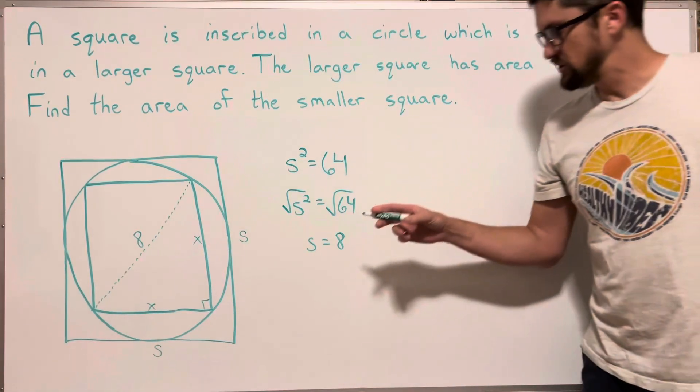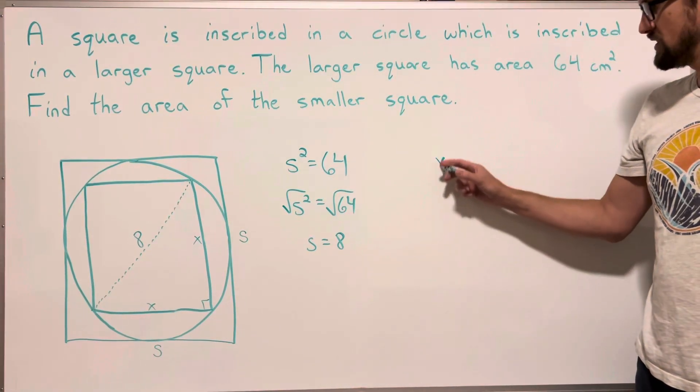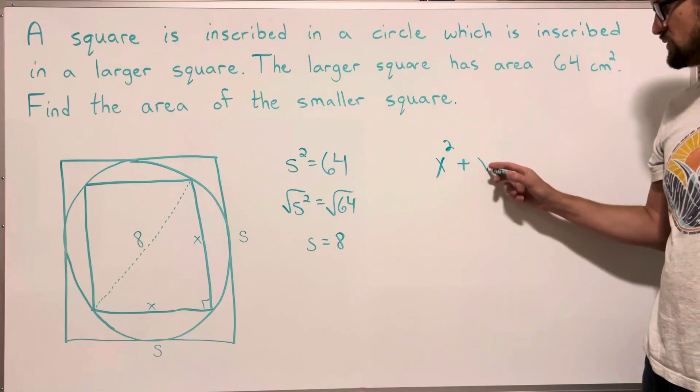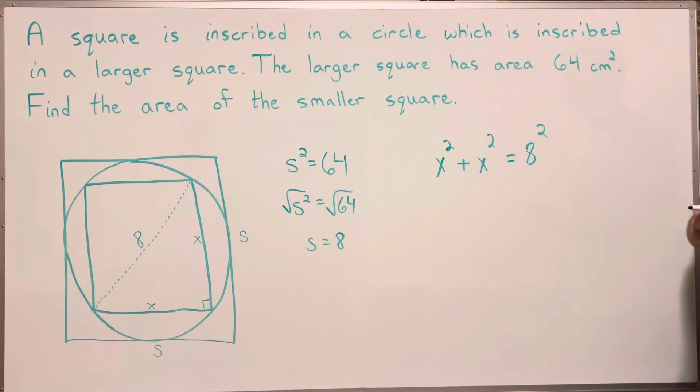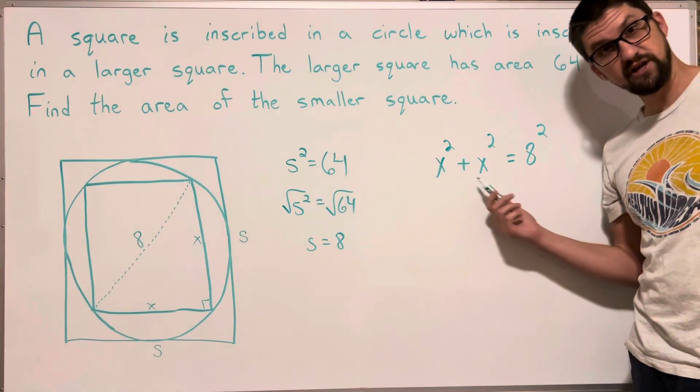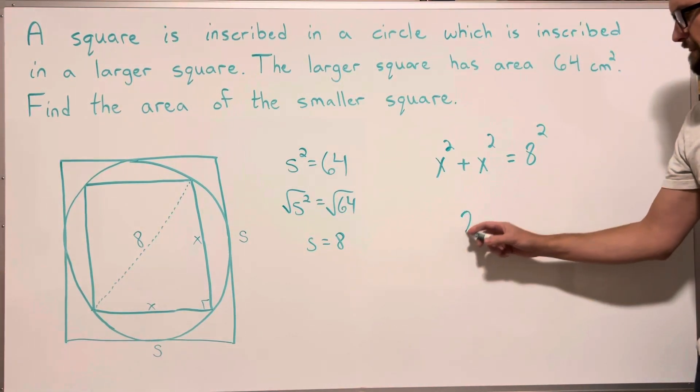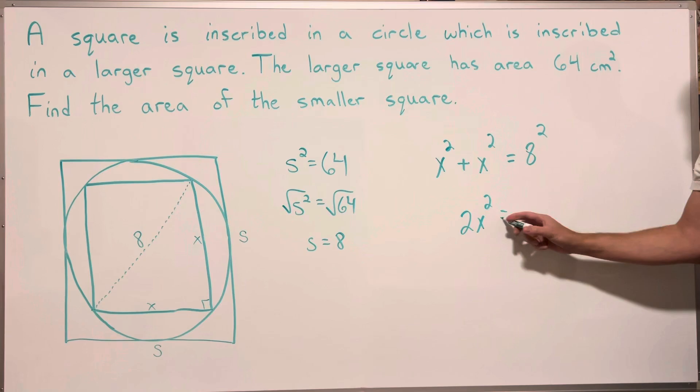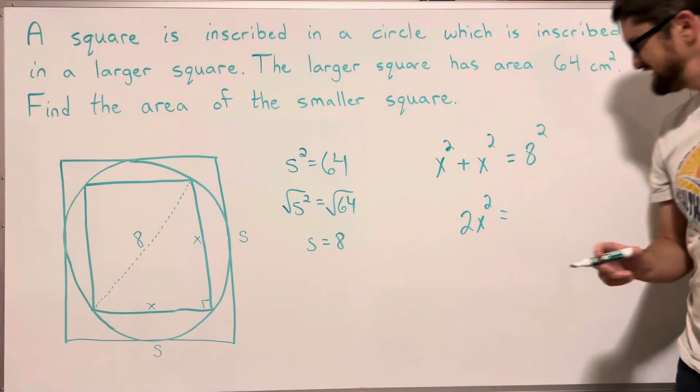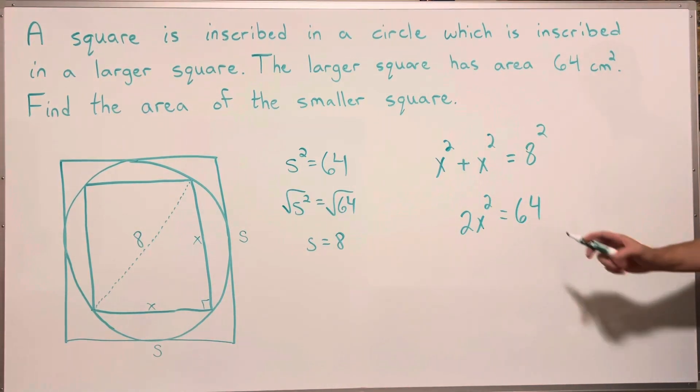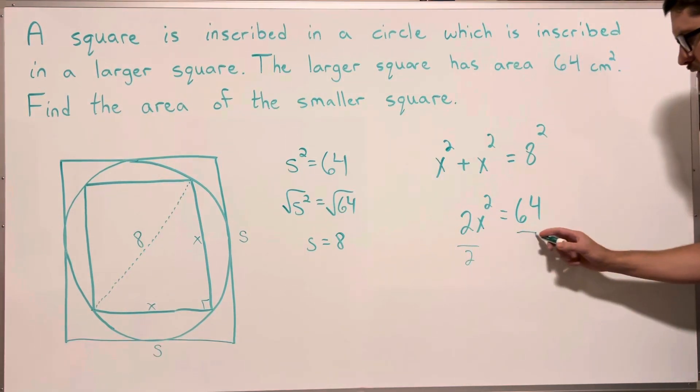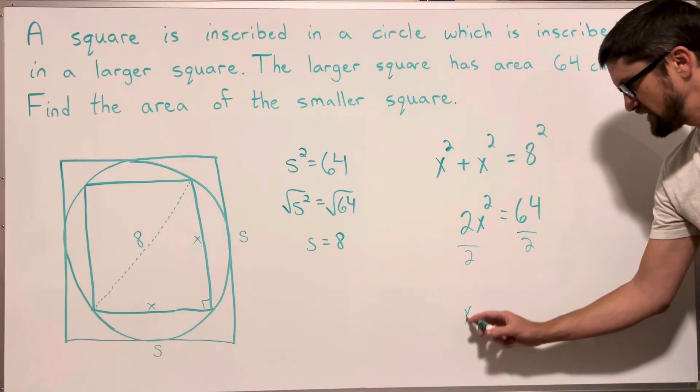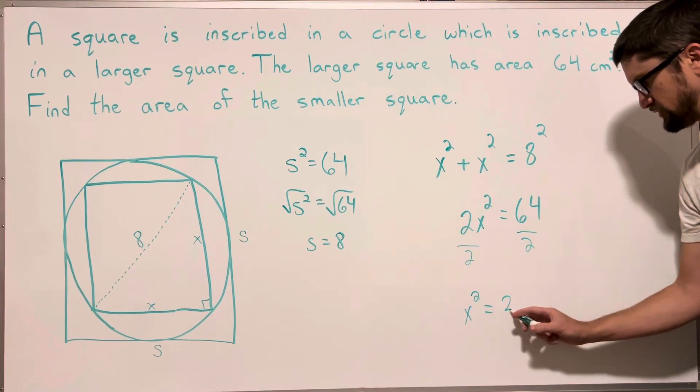So using Pythagorean theorem I get x squared plus x squared is 2x squared. 8 squared is 64. Dividing both sides by 2, I get x squared equals 32.